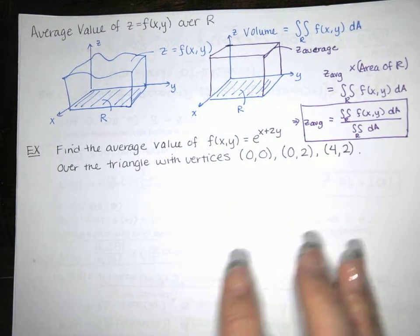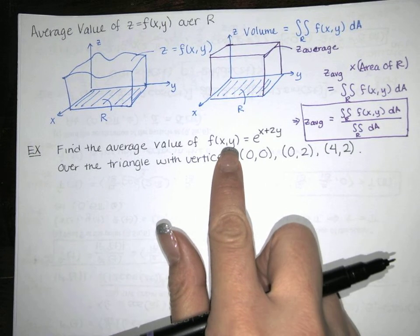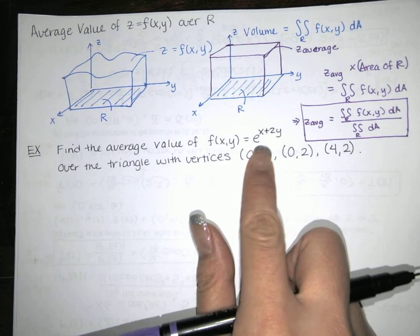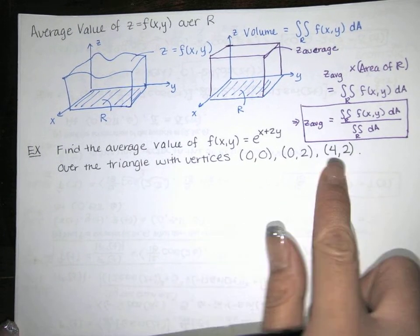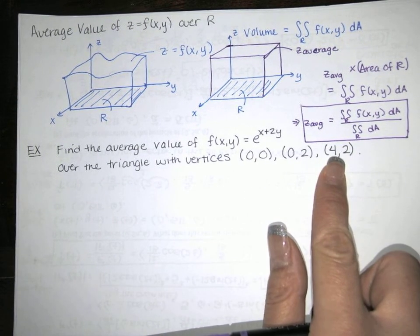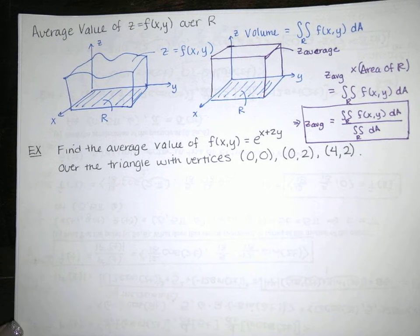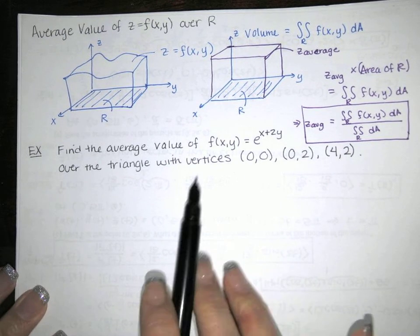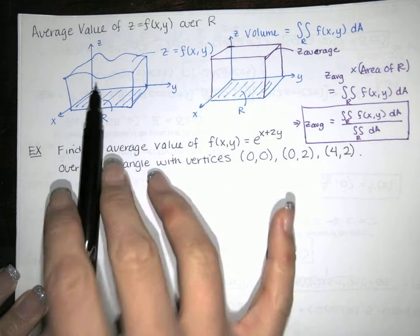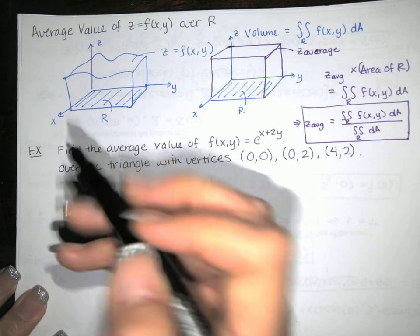Now we want to apply that formula to a particular function. We've got z equals f of xy, which is e to the x plus 2y. We want the average value over a triangle with given vertices. This is a triangle in the xy plane, so the first thing I want to do is draw that triangle. I'm not sketching the surface z equals f of xy here — I'm just drawing the region R in the xy plane.